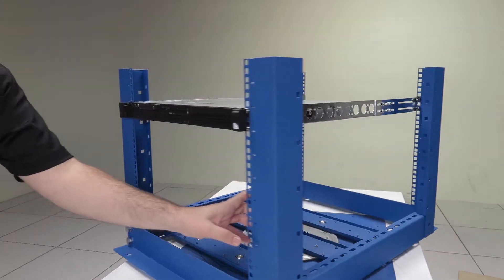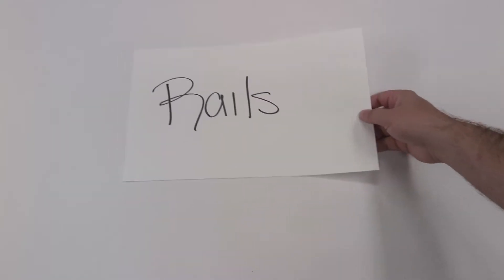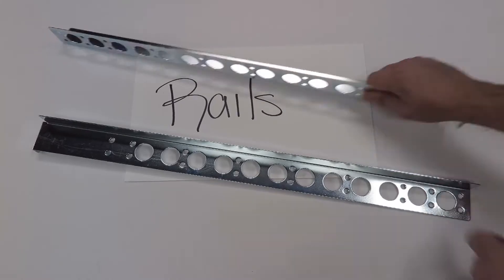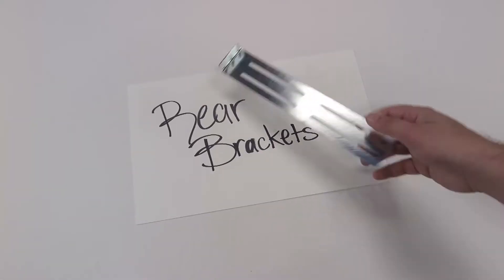Here's what you'll need to set it up. Rails - this is the part that will hold your server. Rear brackets - these attach to the rails and provide support in the back. And hardware.